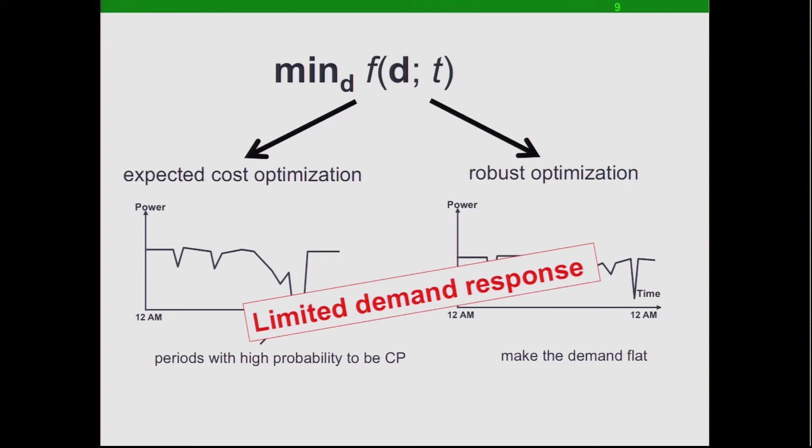For market design, one way is that by picking a different pricing scheme, you can actually change the objective function for each customer. Even within coincident peak pricing, there are questions such as how to pick the coincident peak hour and how many warnings to send. This depends not only on the utility's own considerations, but also on how the customer will respond — whether they turn on their backup generator or just ignore the signal. How many warnings you send reflects a trade-off: if you send too few, you might miss the coincident peak hour, but if you send too many, the customer might just ignore your warning signal.